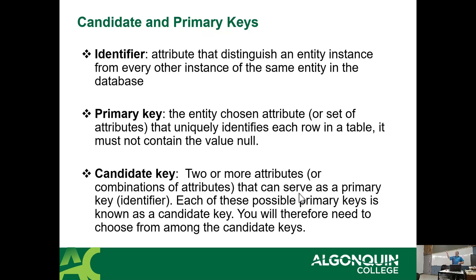That is at the design stage while you're talking about entities. When you're talking about actual tables, we have something called the primary key. The primary key is the chosen attribute — usually the identifier — that uniquely identifies each row in the table. Originally when doing initial design they said "we're going to have a student number as our unique identifier," and when they created the tables they made it an actual field, which became the primary key.